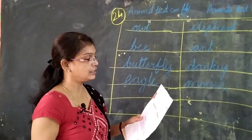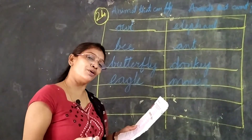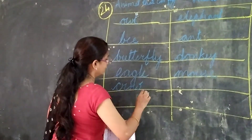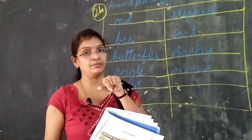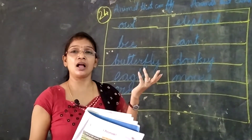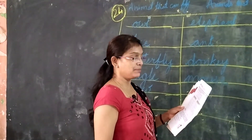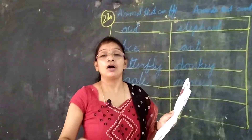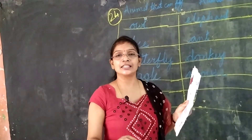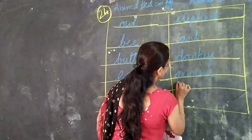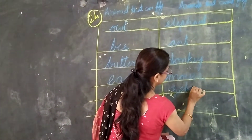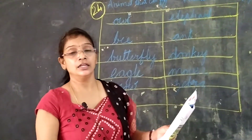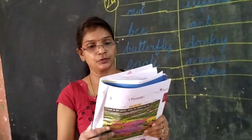Eagle is a bird so it has wings and can fly — write eagle, E-A-G-L-E. Crow is also a bird — it is black in color, has a beak, makes a caw-caw sound, and can fly. Zebra is an animal with stripes on its body and four legs, so zebra goes under 'cannot fly.' Z-E-B-R-A.